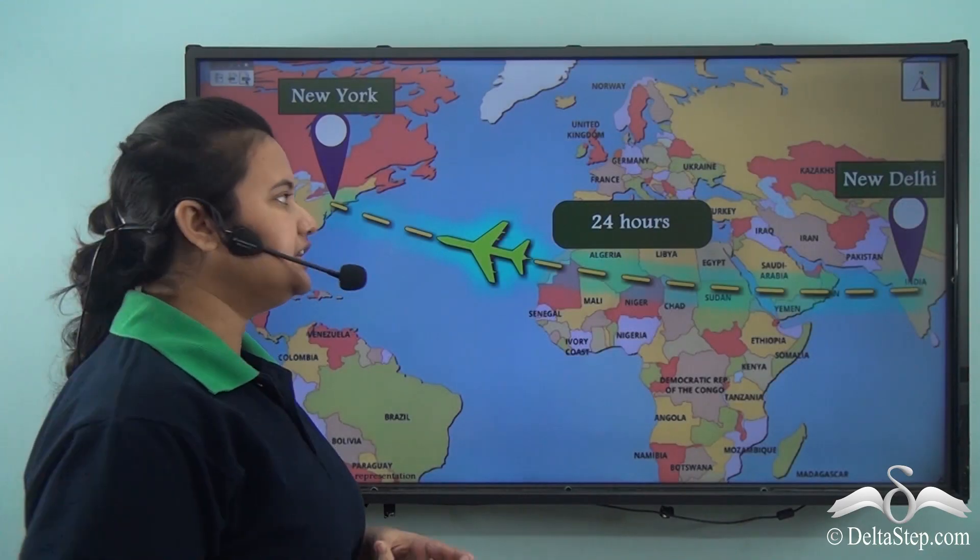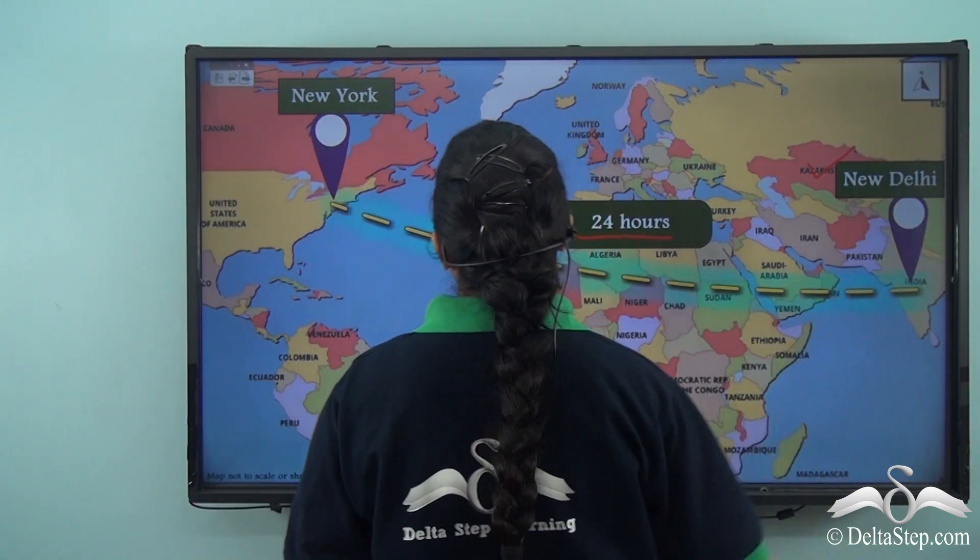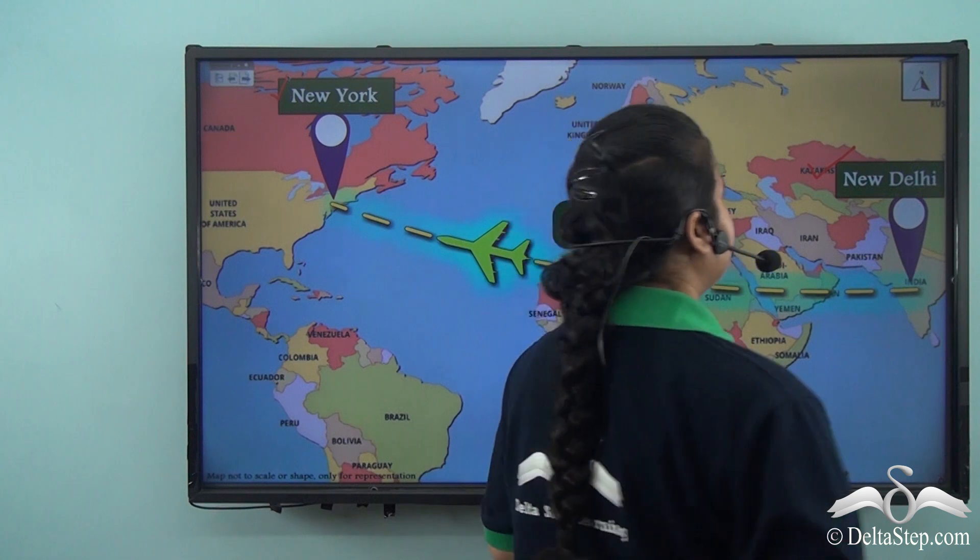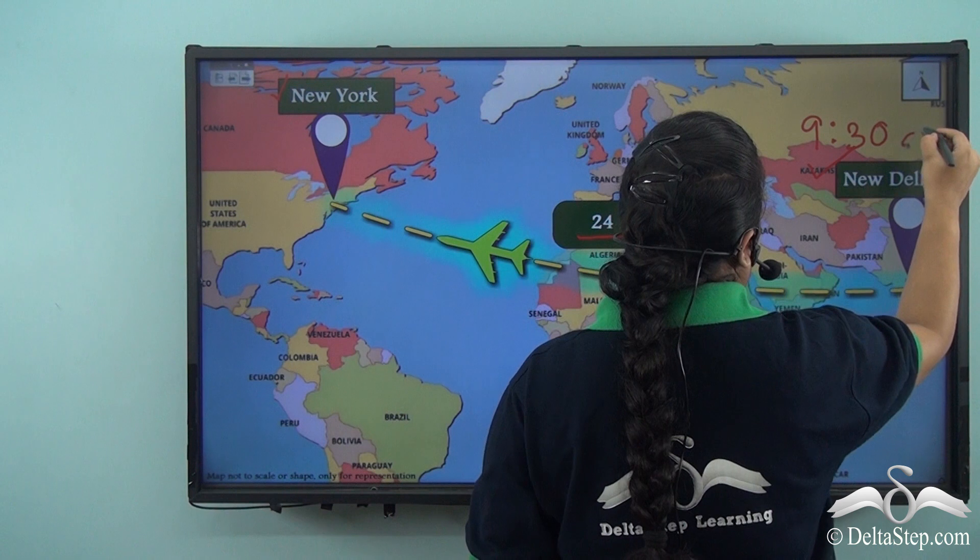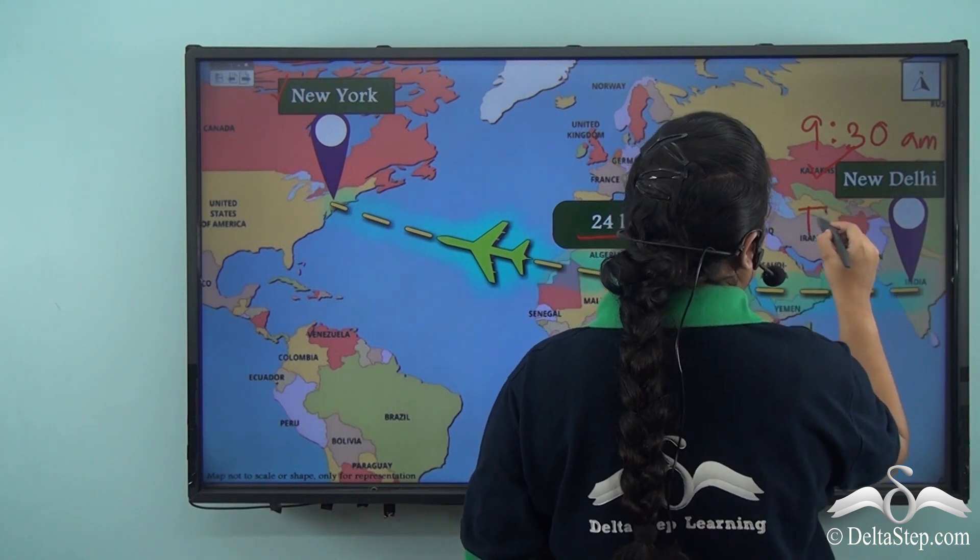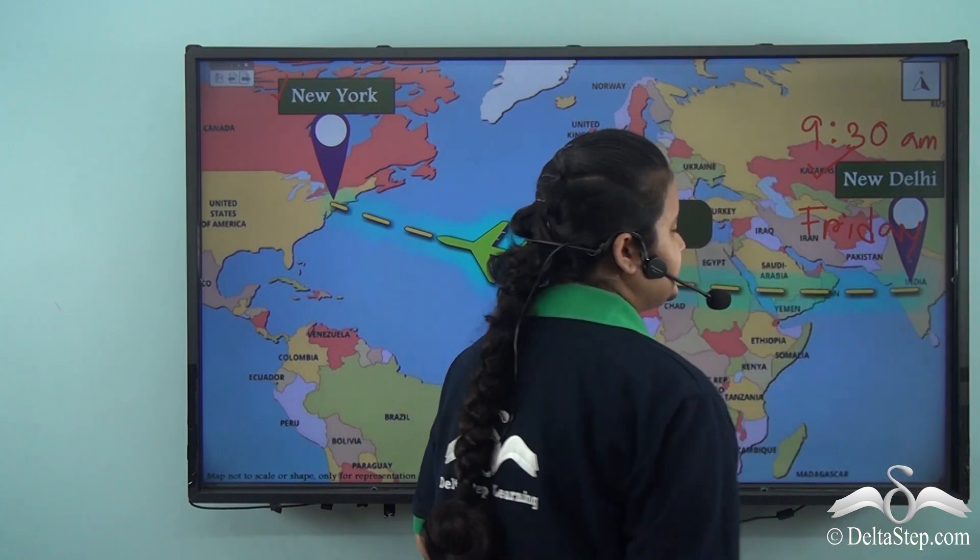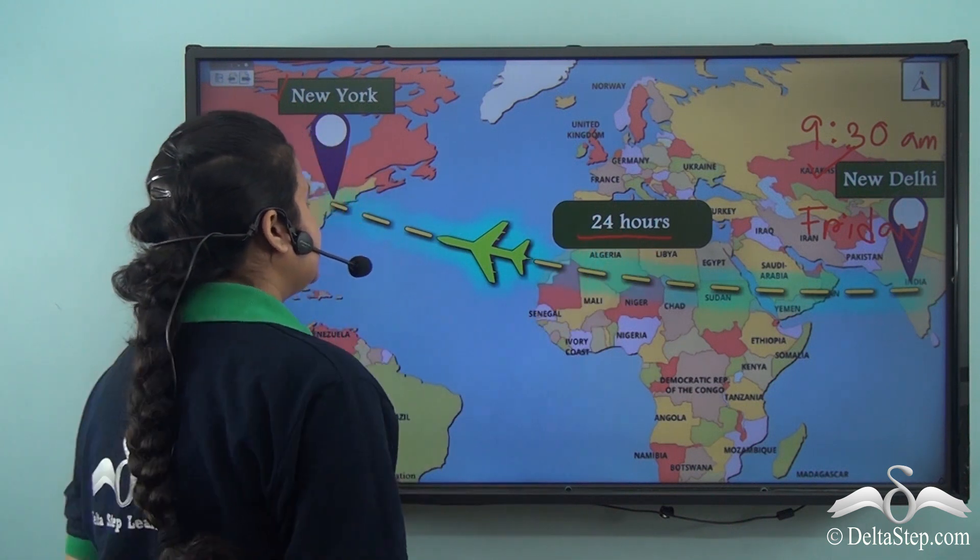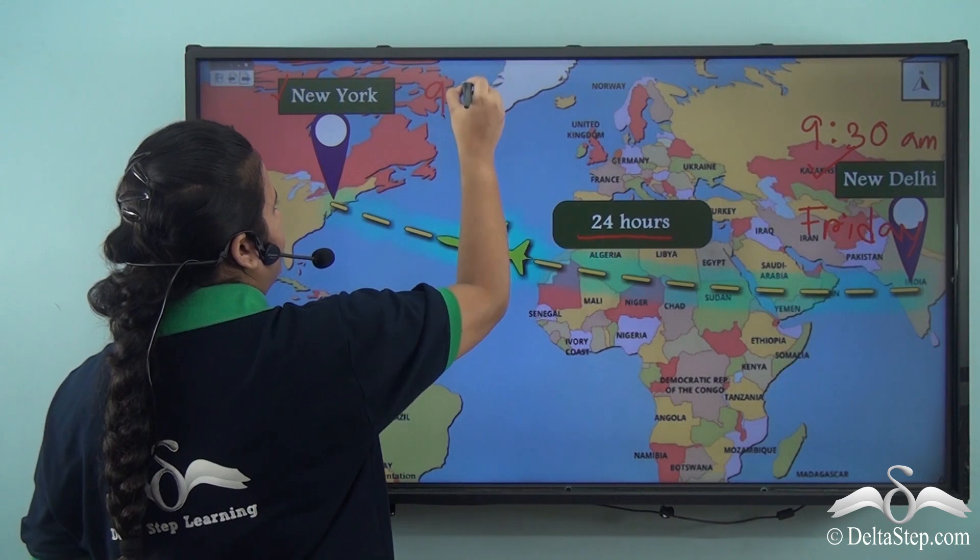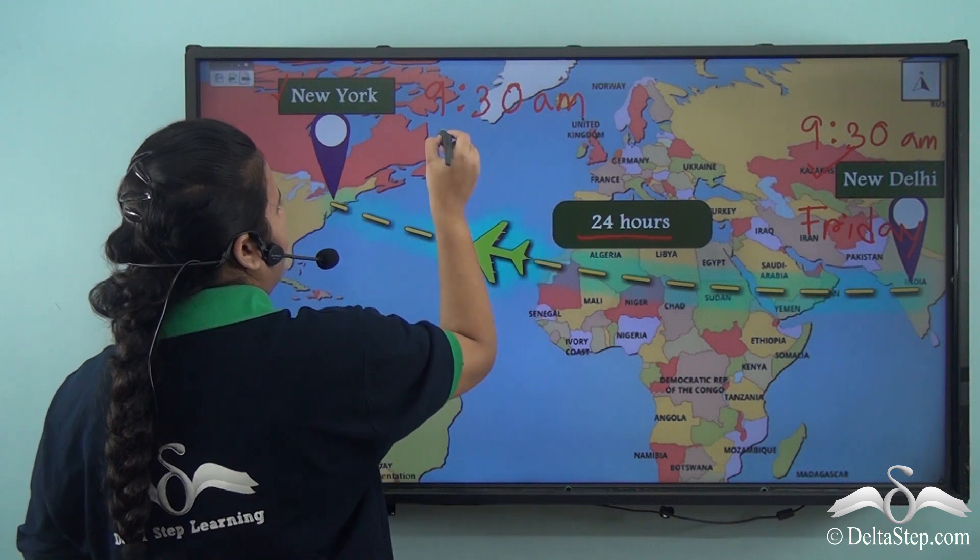The flight took 24 hours to travel from New Delhi to New York. Samir calculated that if he boarded the flight at 9.30 am on Friday and the time duration is 24 hours, then he should reach New York on 9.30 am on Saturday.